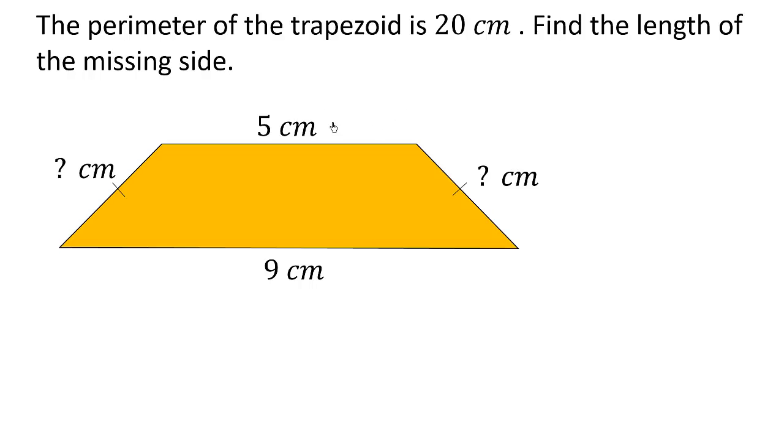Another way is to find the leftover perimeter by adding this side and this side and subtracting it from the given perimeter. So 5 plus 9 will be 14, so 20 minus 14 will be 6.